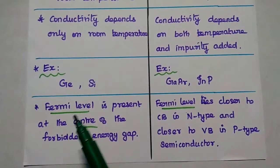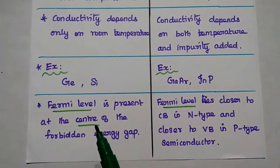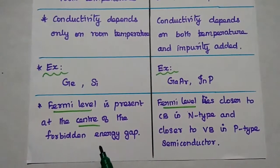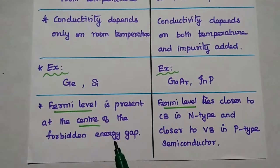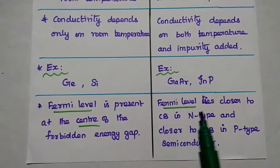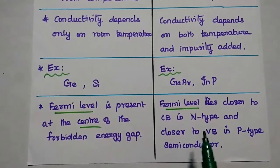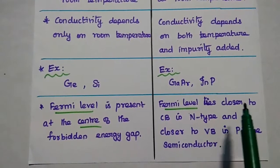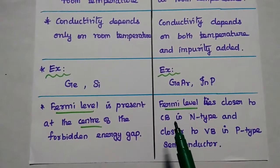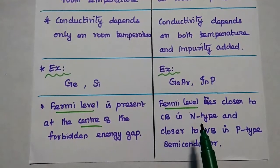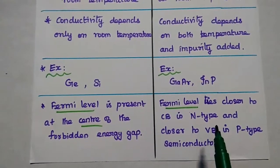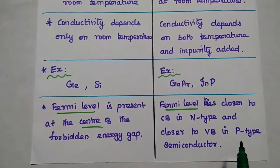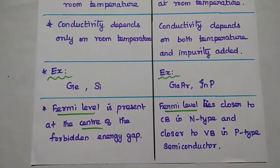Fermi level is present at the center of the forbidden energy gap in the intrinsic semiconductor. But for extrinsic semiconductor, the Fermi level lies closer to the conduction band in case of N-type and nearer to the valence band in case of P-type semiconductor.